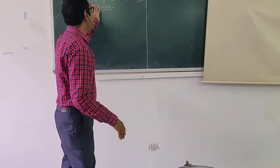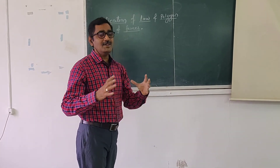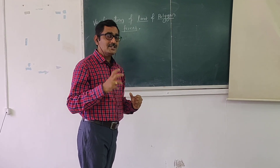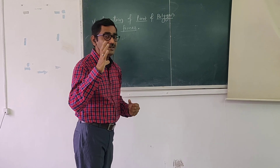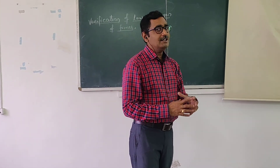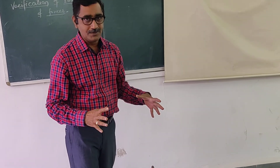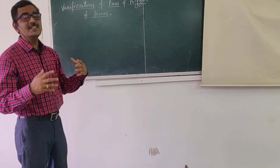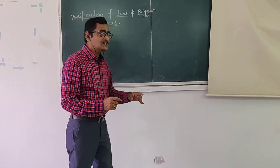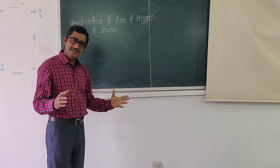I have already told that in the law of polygon of forces, we are creating one force system in which there will be five different concurrent forces. While creating this force system, that force system will be in equilibrium — meaning the resultant of that force system will be zero. The law of polygon of forces states that if the number of forces acting on a body are represented by the sides of a polygon taken in order, then the closing side represents their resultant.